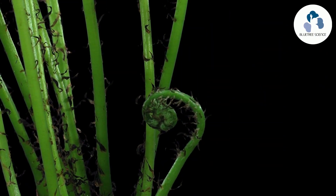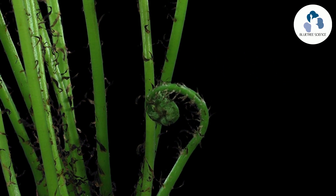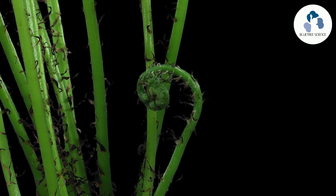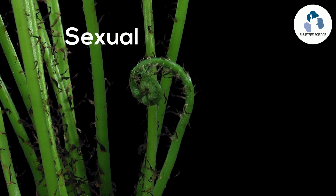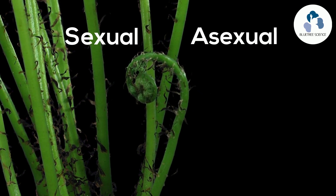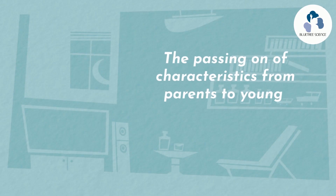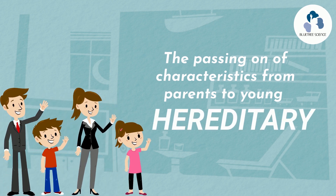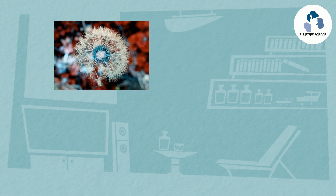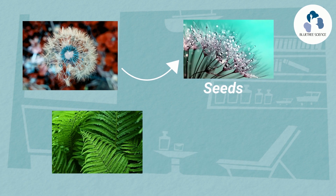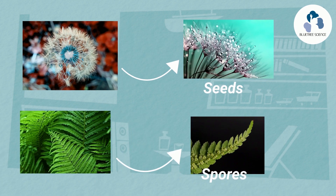Plant reproduction is the production of offspring in plants which can be accomplished by sexual or asexual reproduction. The passing on of characteristics from parents to young is called hereditary. Flowering plants reproduce through seeds while non-flowering plants reproduce through spores.